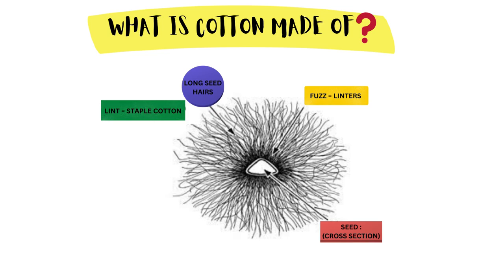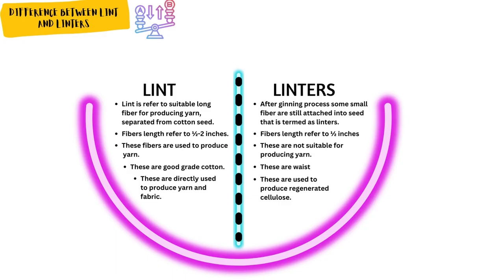What is cotton made of? Difference between lint and linters: lint refers to suitable long fibers for producing yarn, separated from the cotton seed. After the ginning process, some small fibers are still attached to the seed — these are termed as linters.